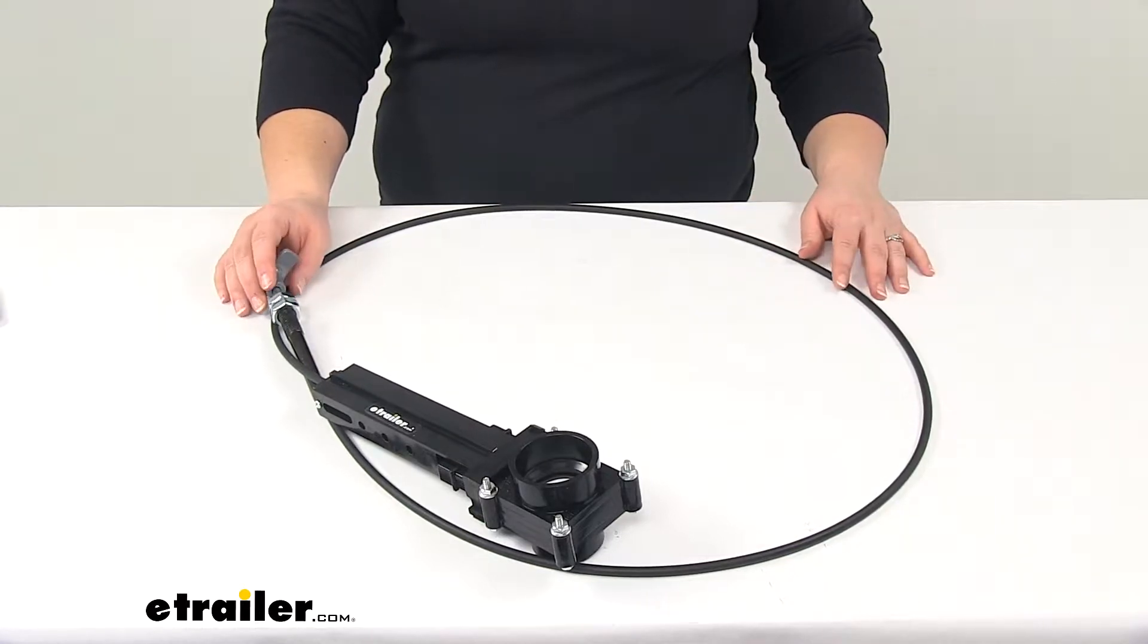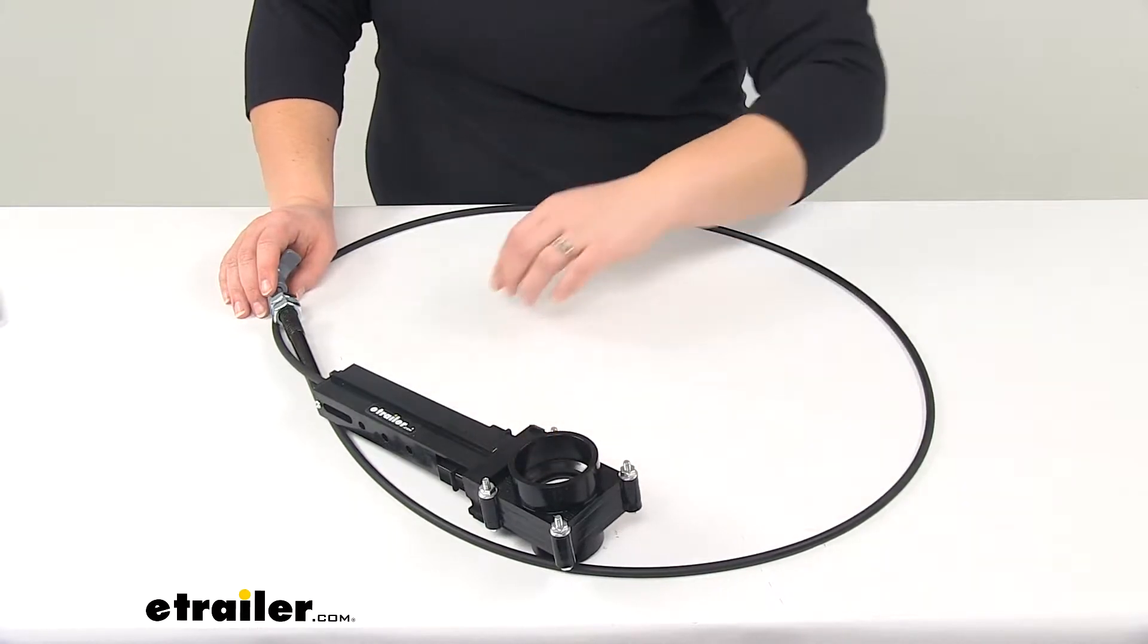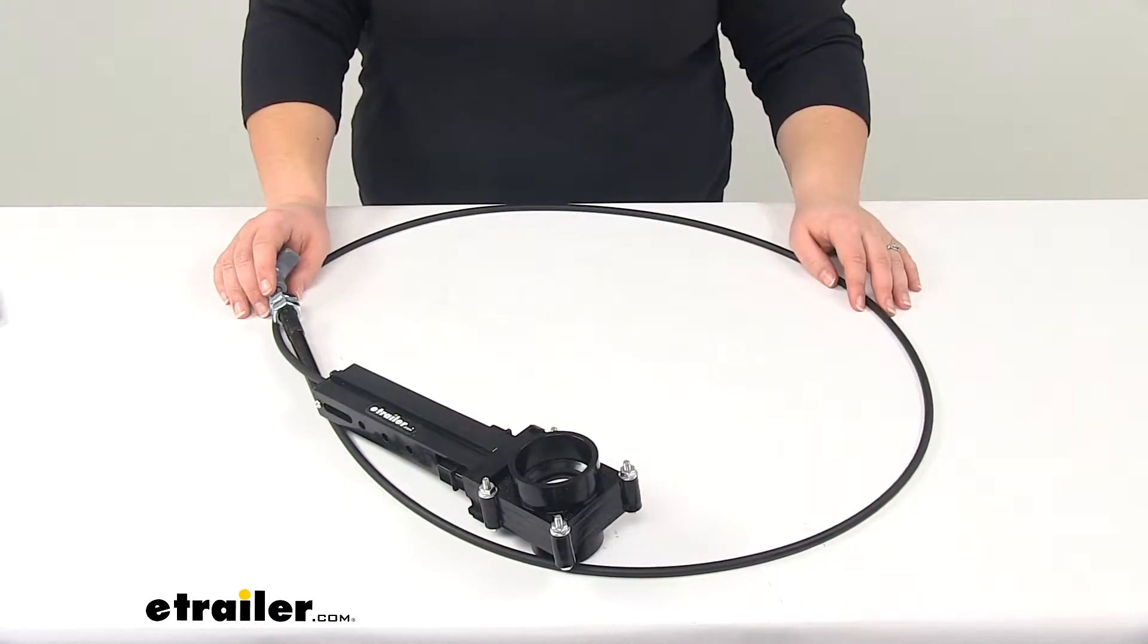Now this is going to replace the valve for your RV's gray water tank. It has that one and a half inch diameter to allow passage for the wastewater to travel freely when the valve is open.